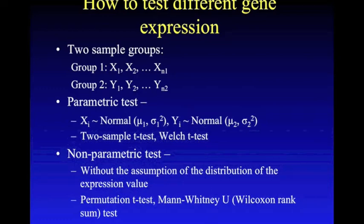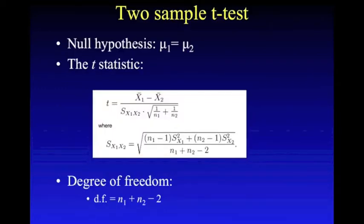Parametric tests like two-sample t-tests and Welch t-tests assume that the data follows a normal distribution, while nonparametric tests like permutation tests and Mann-Whitney U tests hold no assumption of the data's distribution pattern. The two-sample t-test hypothesis is that the means of the two groups are the same. The statistic used is the t-statistic, whose formula is shown on the slide. After getting the t-value and degree of freedom, you can compare them with values in the standard t-table and accordingly accept or reject the null hypothesis.